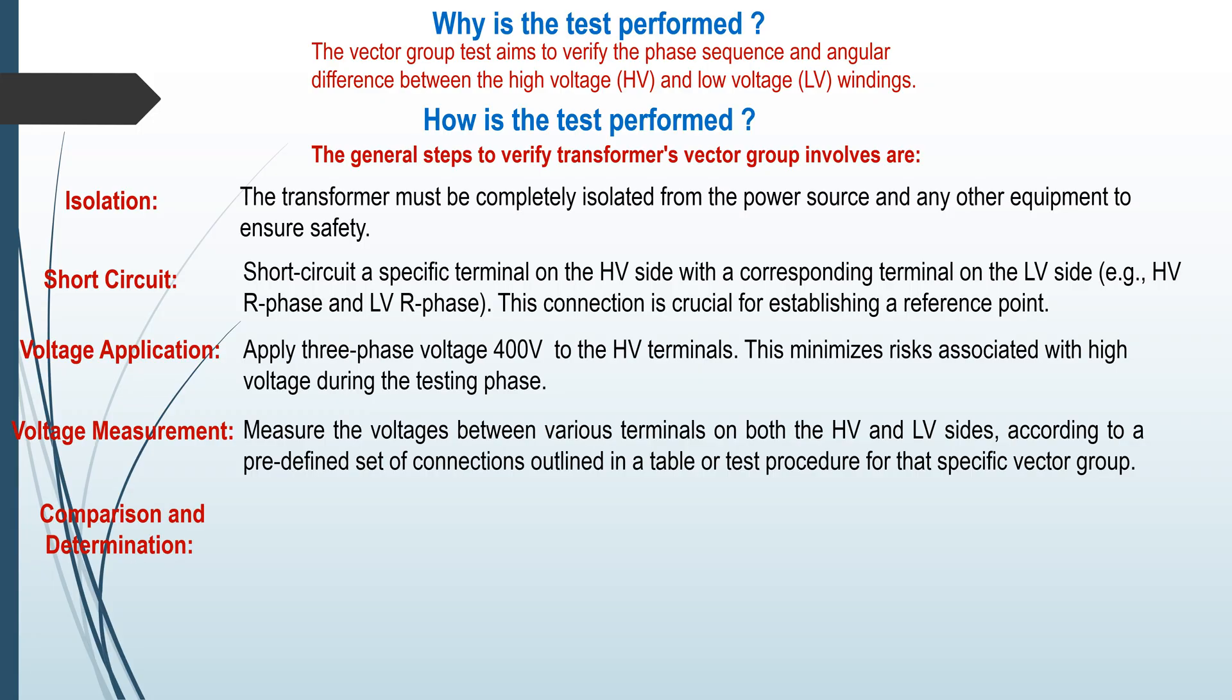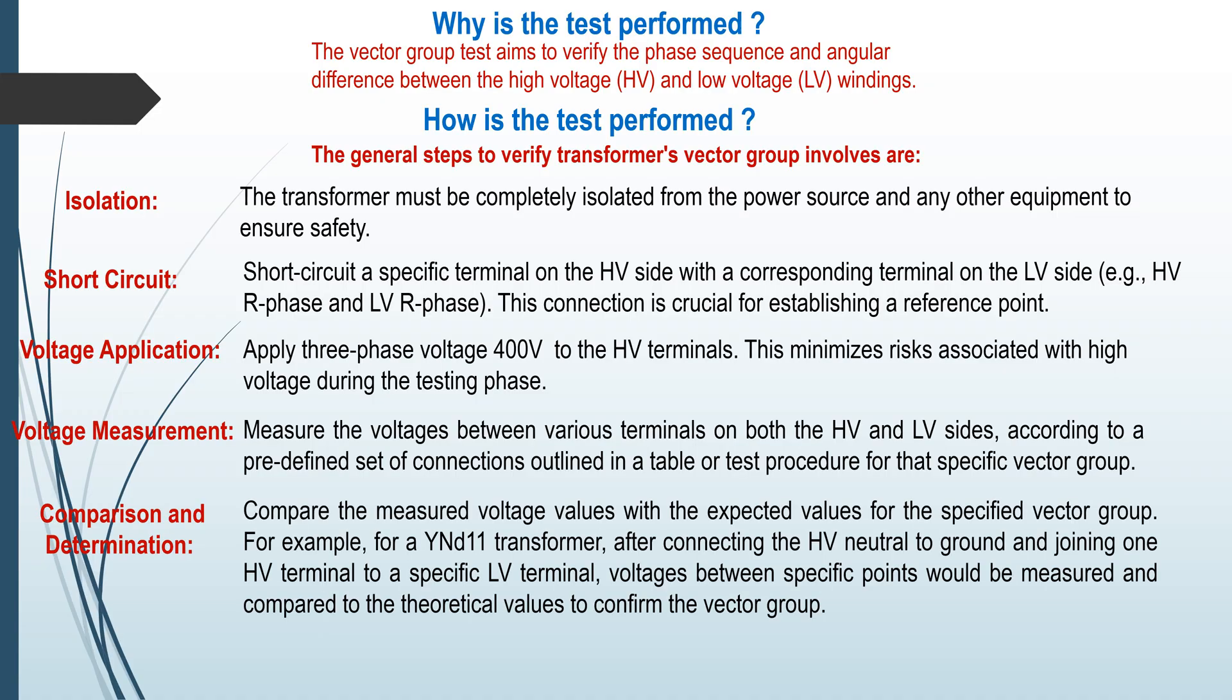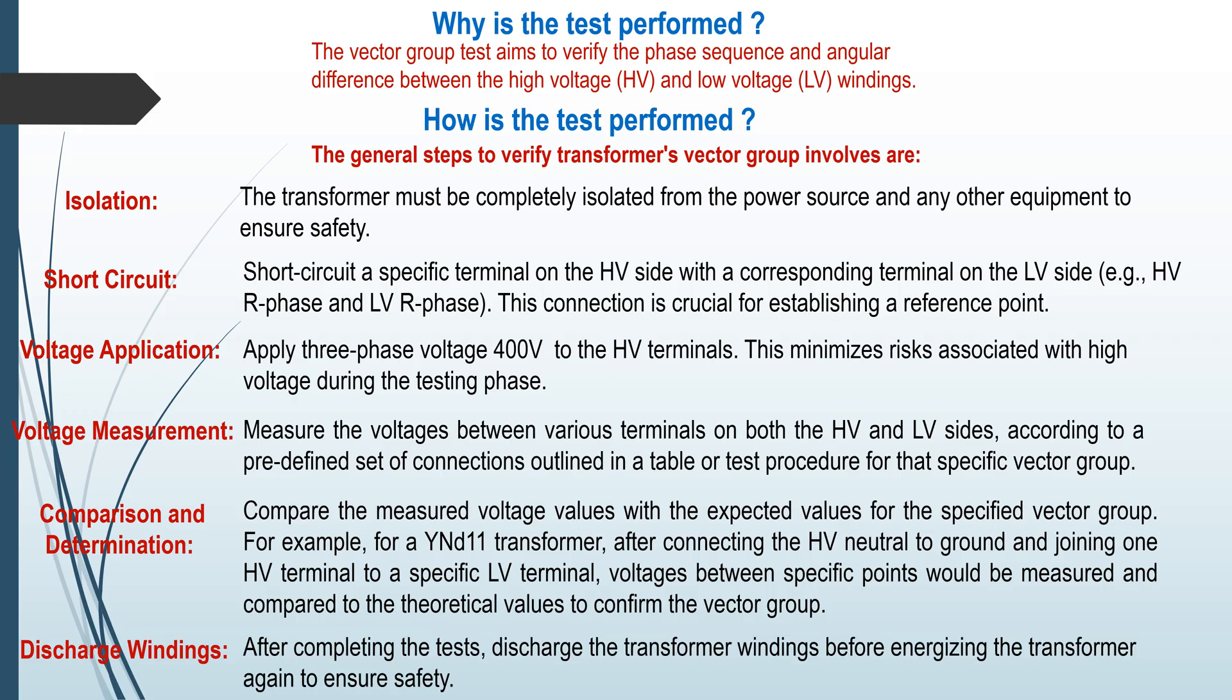Comparison and determination: Compare the measured voltage values with the expected values for the specified vector group. For example, for a YND11 transformer, after connecting the HV neutral to ground and joining one HV terminal to a specific LV terminal, voltages between specific points would be measured and compared to the theoretical values to confirm the vector group. Discharge windings: After completing the test, discharge transformer winding before energizing the transformer again to ensure safety.